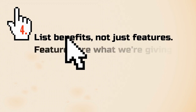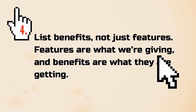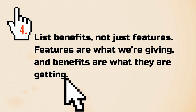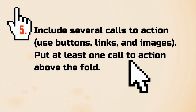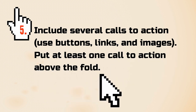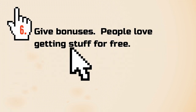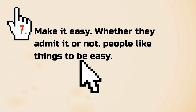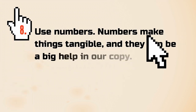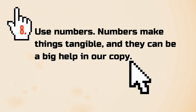4. List benefits, not just features. Features are what we're giving; benefits are what they are getting. 5. Include several calls to action — use buttons, links, and images, and put at least one call to action above the fold. 6. Give bonuses — people love getting things for free. 7. Make it easy — whether they admit it or not, people like things to be easy. 8. Use numbers — numbers make things tangible and can be a big help in our copy.